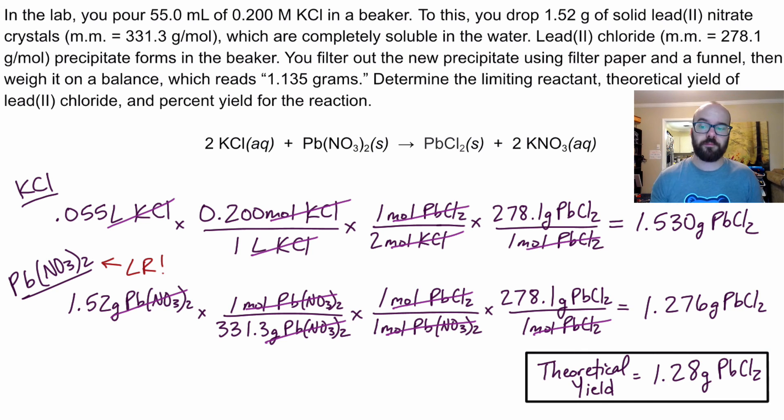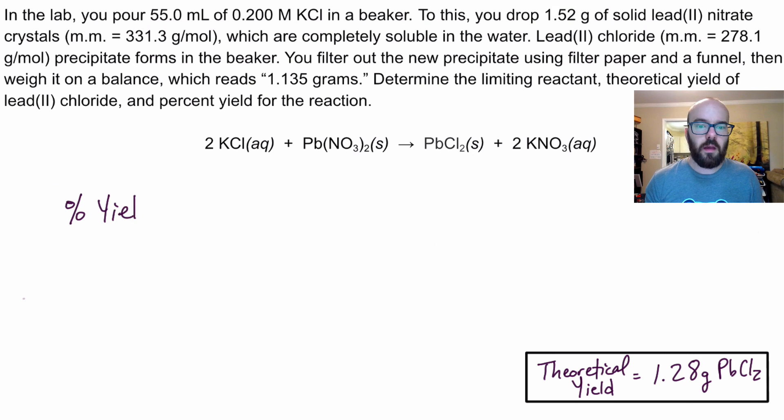Therefore, 1.276 is our theoretical yield. Theoretically, that's how much we could get. And I'm going to round that to three sig figs because we use 1.52 and that only has three sig figs. For our final answer, it has to be the fewest number of sig figs we had in our starting information.